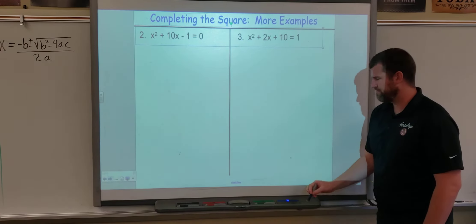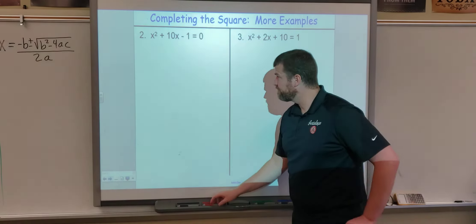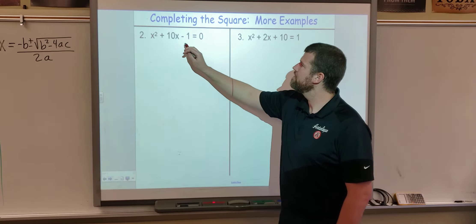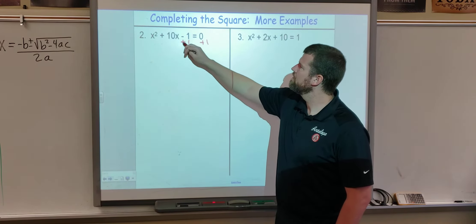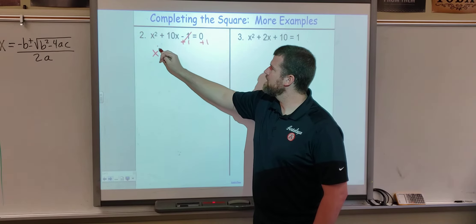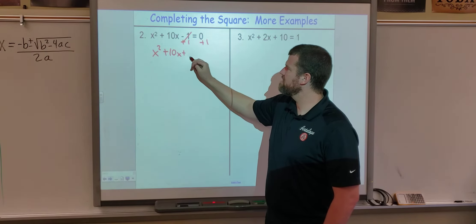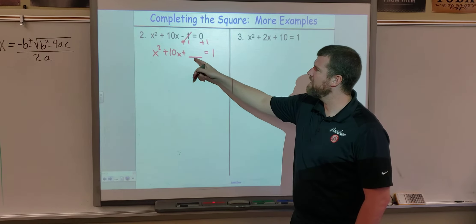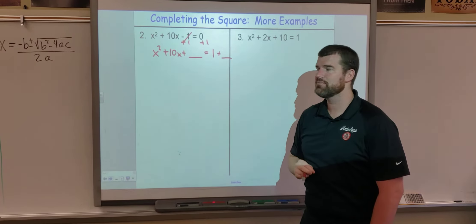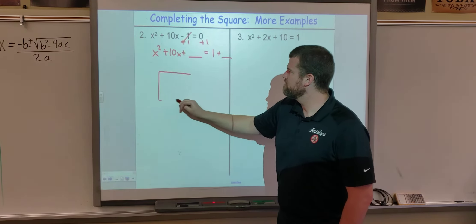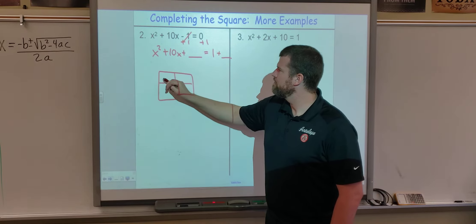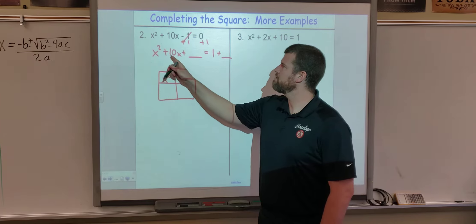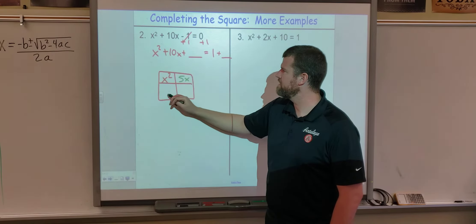A couple more examples. First step: we don't want it equal to zero; we want to move our c to the other side. So we add 1 and we get x² + 10x. The new value we're going to find will be equal to 1, and when we add this value we'll need to add it to the other side as well to keep it balanced. We draw our box and split the middle: we divide 10x into 5x and 5x.